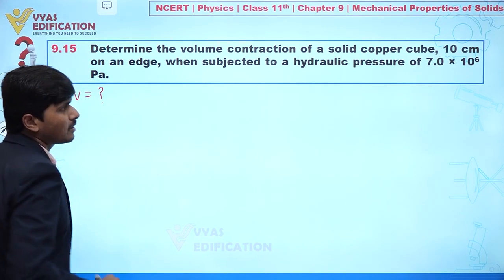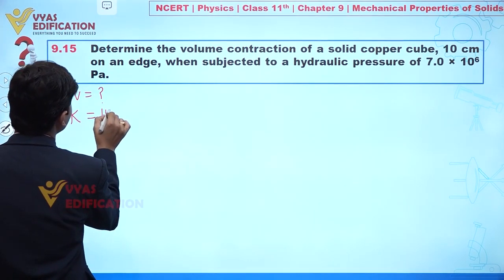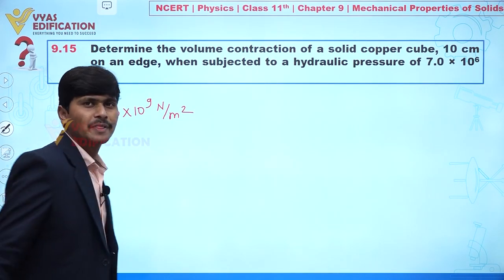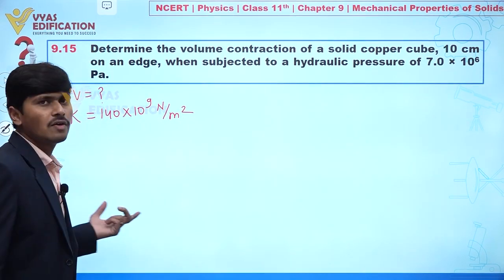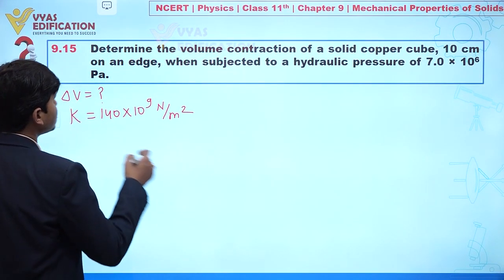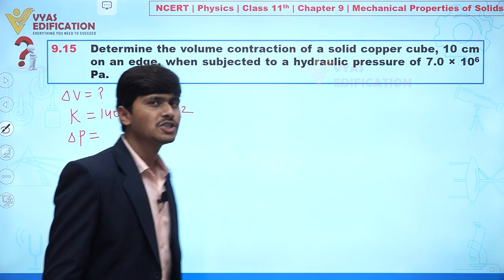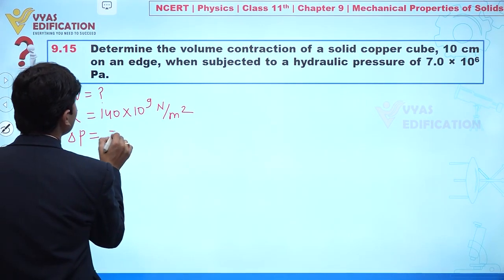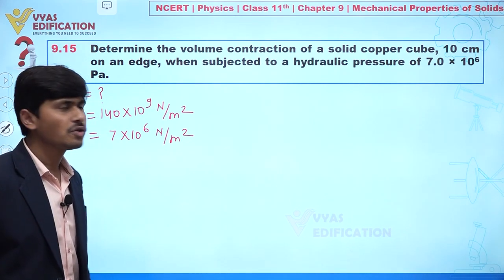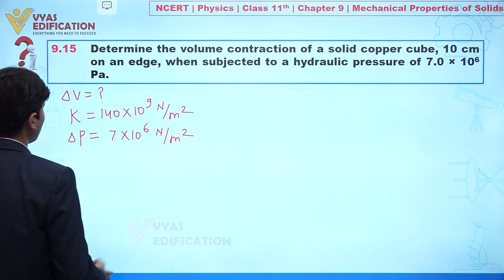For copper, the bulk modulus value is 140 × 10⁹ Newton per meter square. Also given is the hydraulic pressure — hydraulic pressure means change in pressure — and this value is 7 × 10⁶ Newton per meter square. So now we have to find the change in volume.